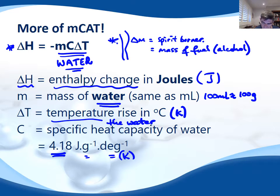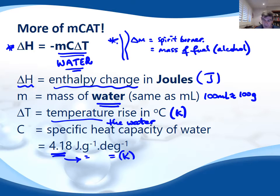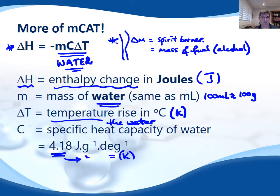This value equates to grams. Sometimes you will find this value given as 4.18 × 10³, but then it will be in joules per kilogram. So just make sure that you match the specific heat capacity constant with its units and convert one into the other if you need to do so.